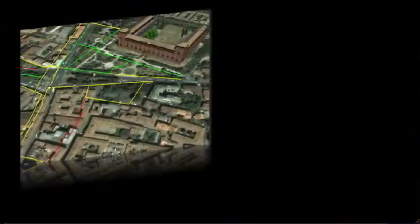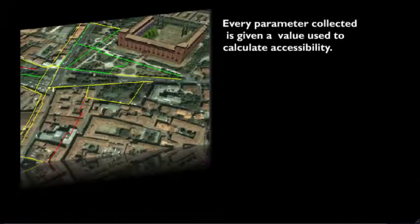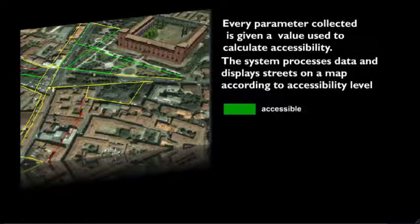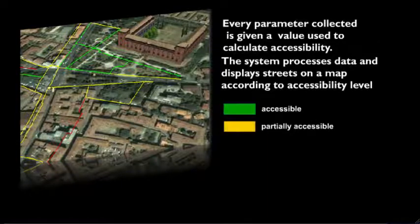Every parameter collected is given a value used to calculate accessibility. The system processes data and displays streets on a map according to accessibility level. Green means accessible, yellow means partially accessible, and red means not accessible.